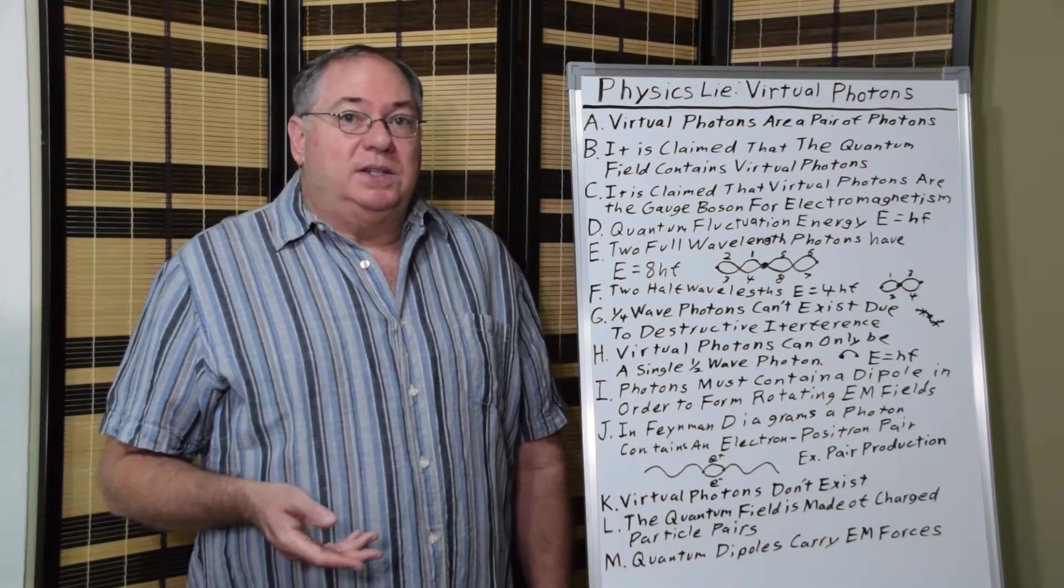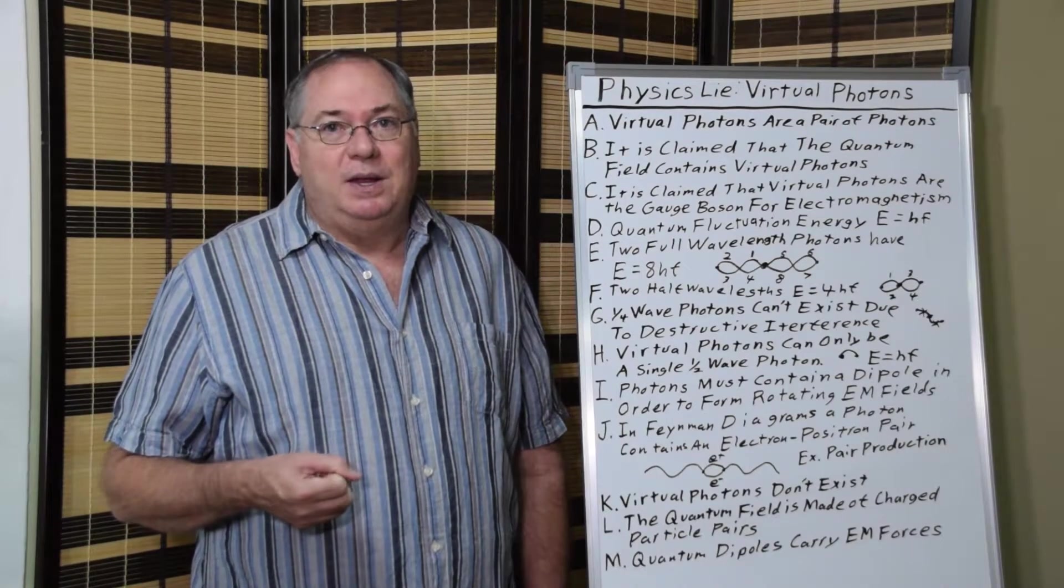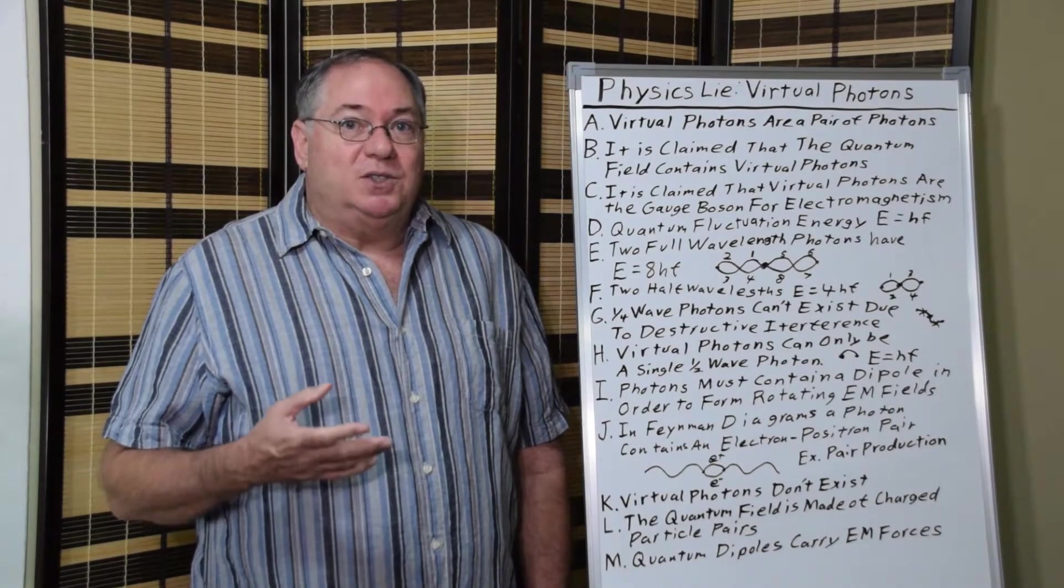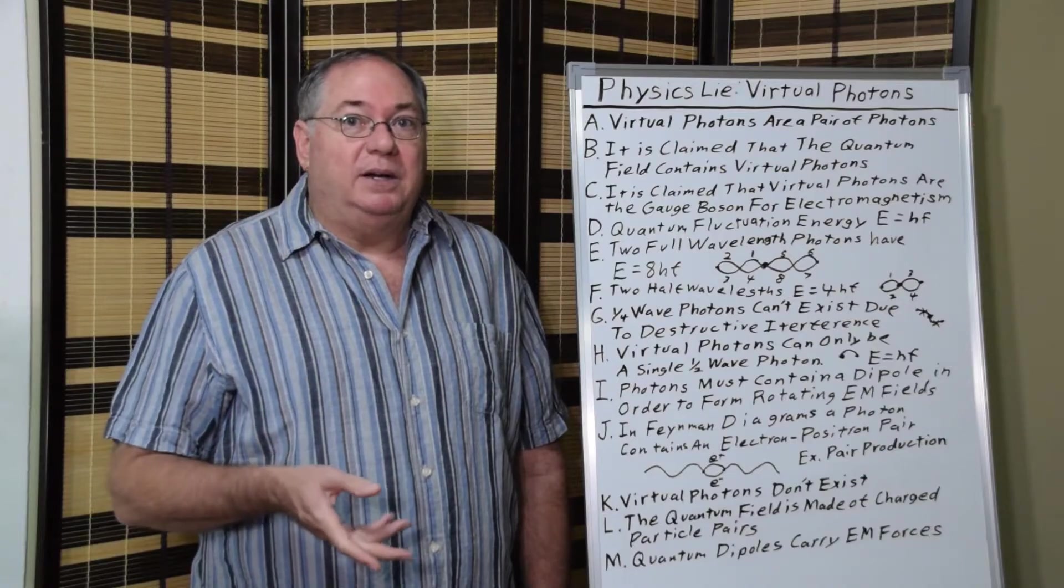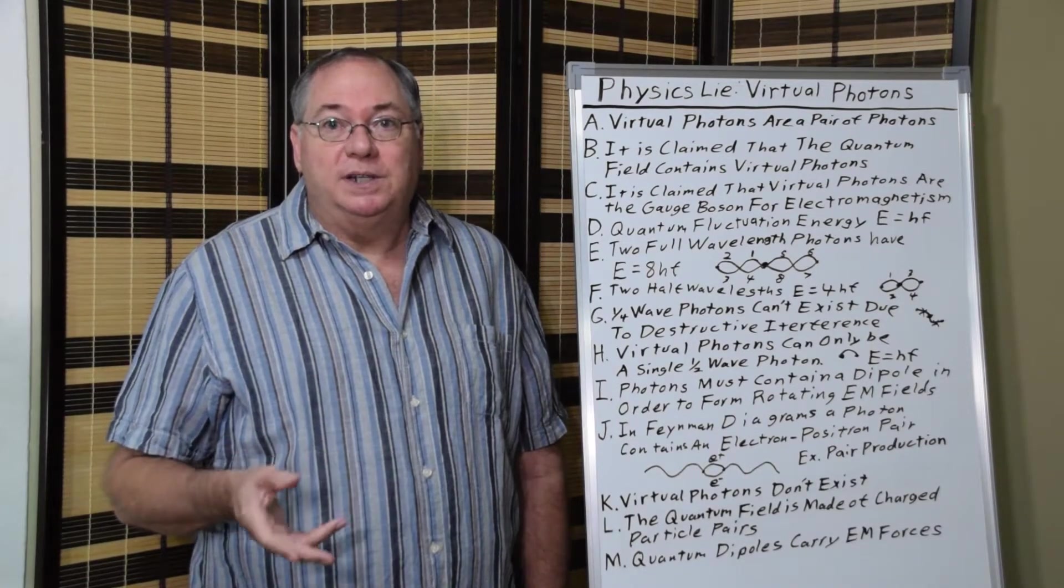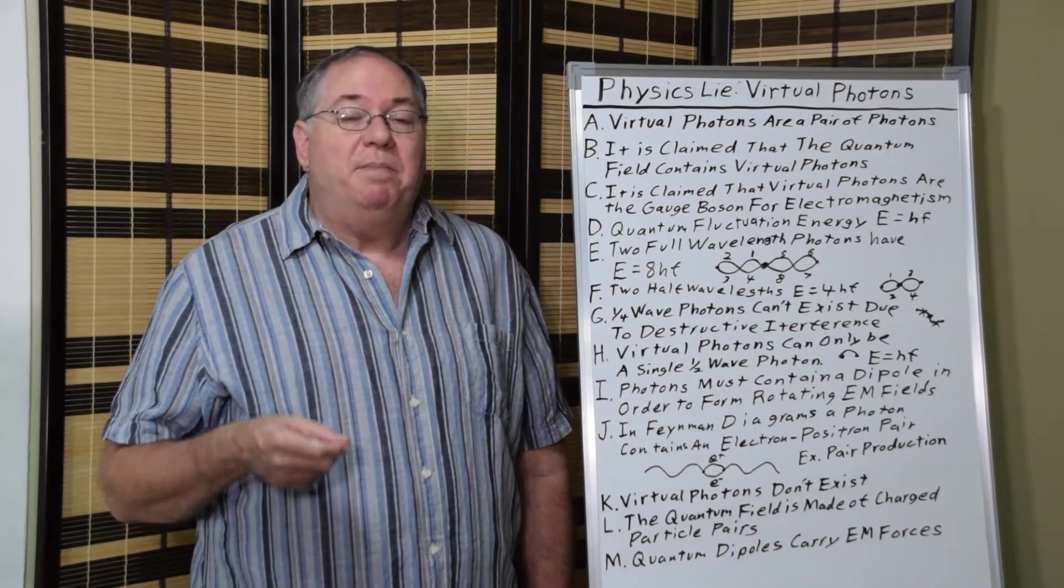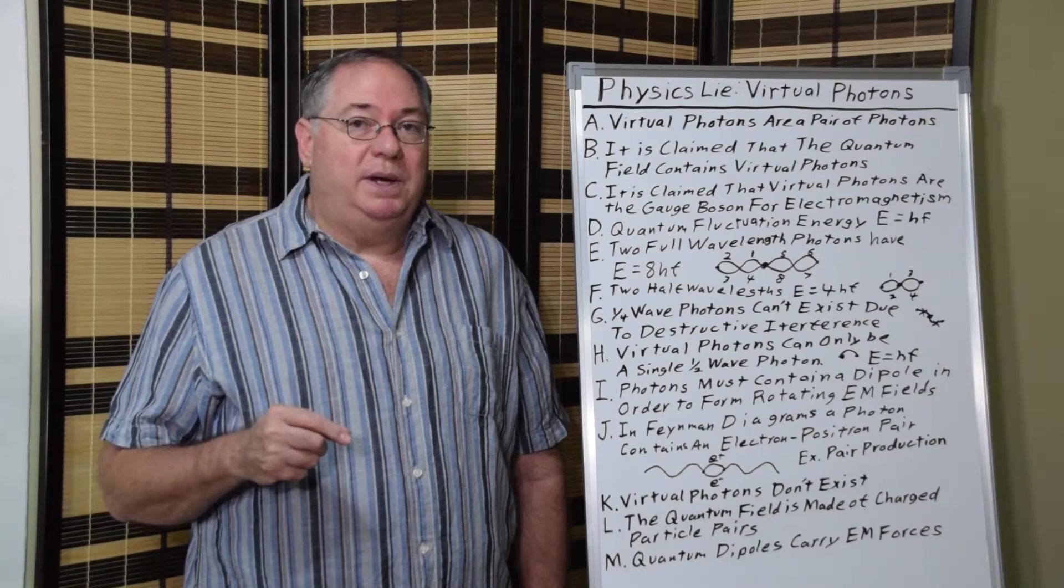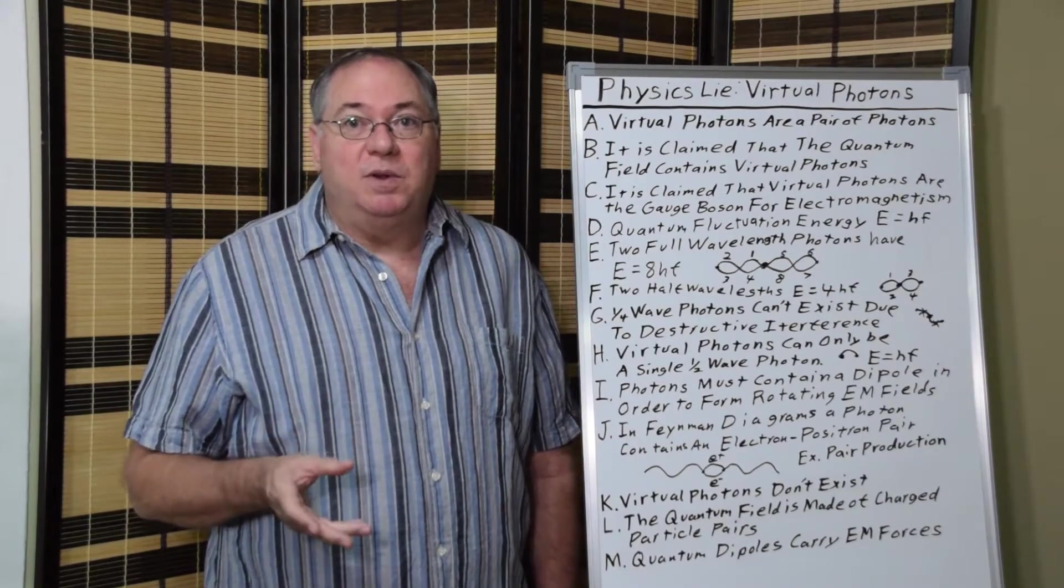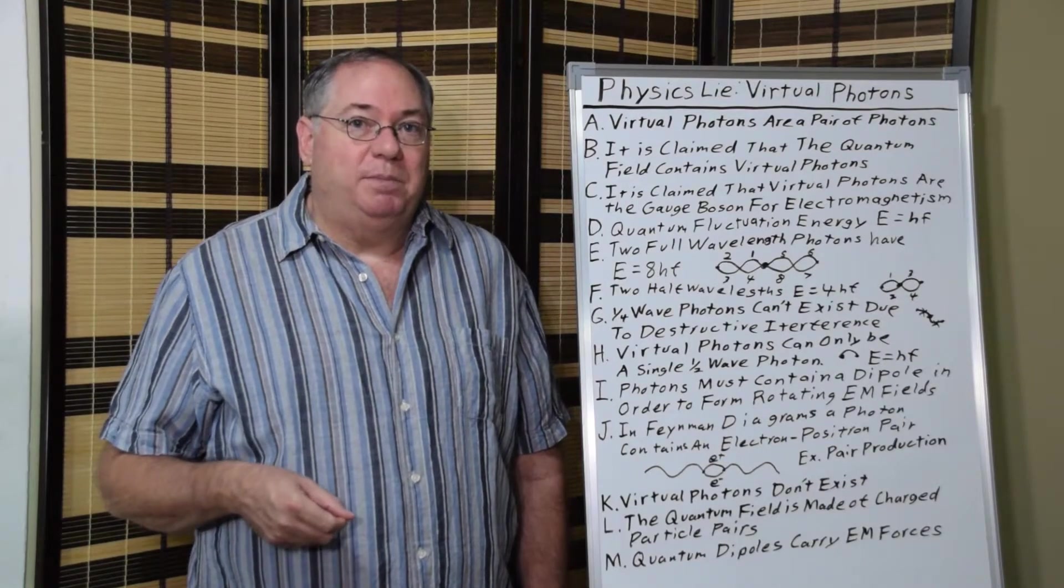So what this tells us is that virtual photons don't exist. What virtual photons really are is they're pairs of oppositely charged quantum fluctuation particle pairs, like electron-positron pairs. They can also be other particle pairs that are real, provided they have equal and opposite charges, such as a proton-antiproton pair.